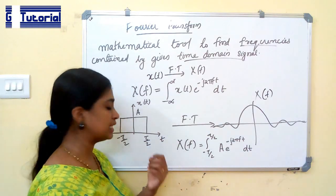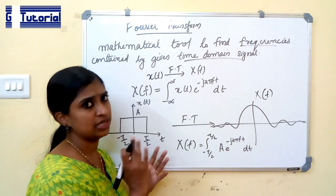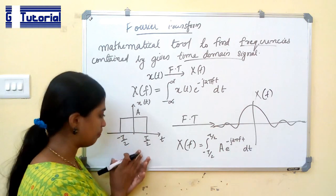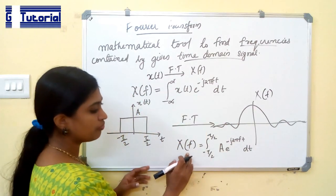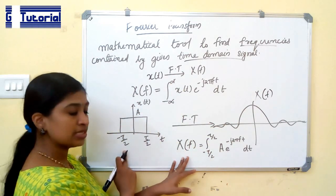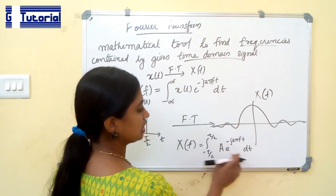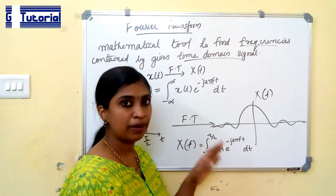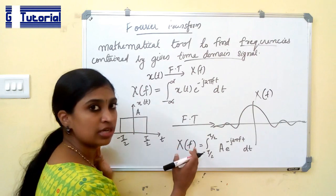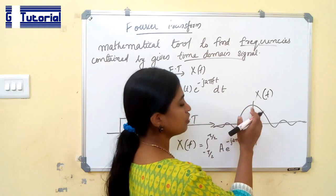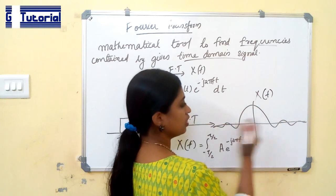Suppose we are trying to transmit a rectangular signal. If you take the Fourier transform of a rectangular pulse whose amplitude is A and time period varies from minus tau/2 to tau/2, on integrating and solving you get a sinc function — sin(πft)/(πft) — which is the equation of a sinc pulse. So the Fourier transform of a rectangular pulse gives a sinc pulse. In the sinc pulse, most of the energy or signal strength is concentrated in the main lobe, and it decreases as it goes to both plus and minus infinity.